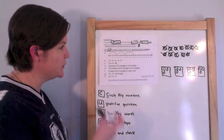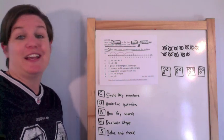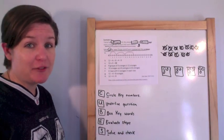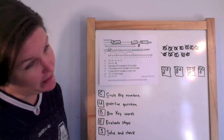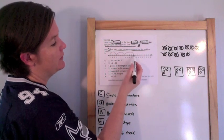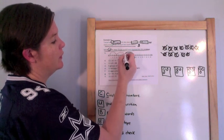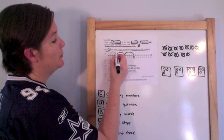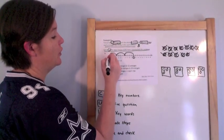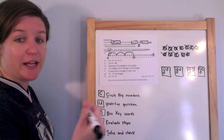Option A shows a number line starting at twelve, counting back by four — but it would have to go all the way to zero, and it doesn't. So this would not represent the problem. Don't get tricked!